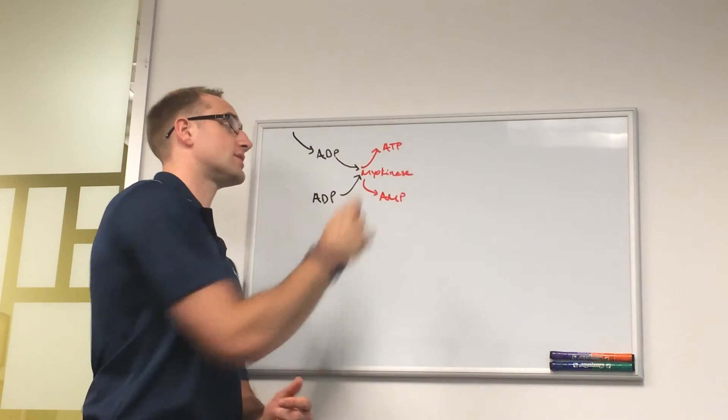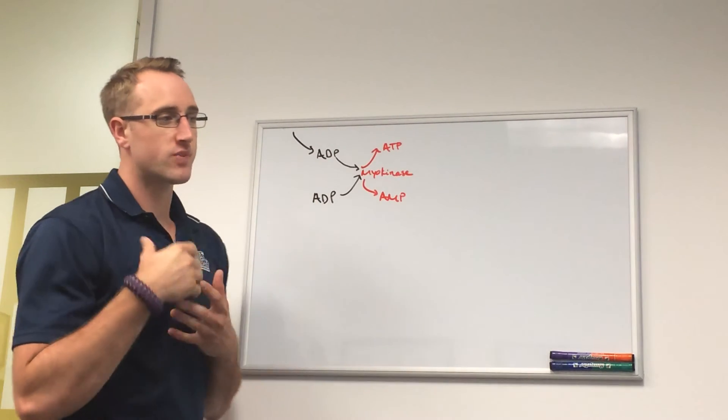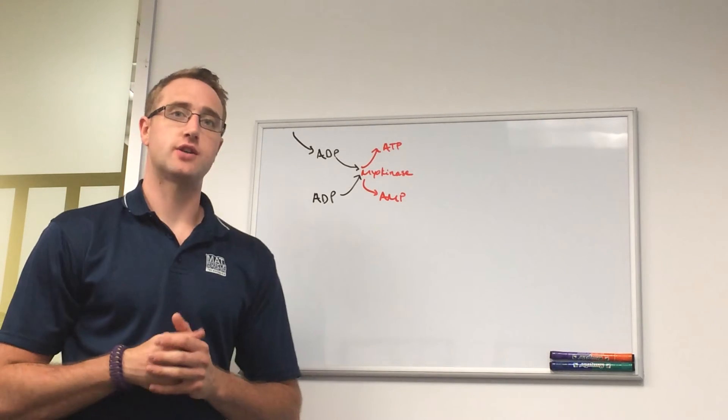So then back to the first question, why is that important? Well, it's important because of AMP diffusing out of the cell, because what happens there is it gets to interact.